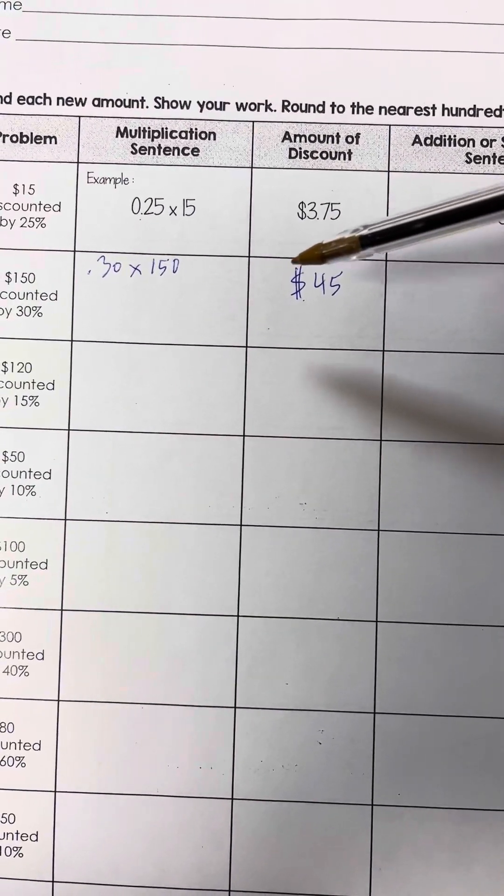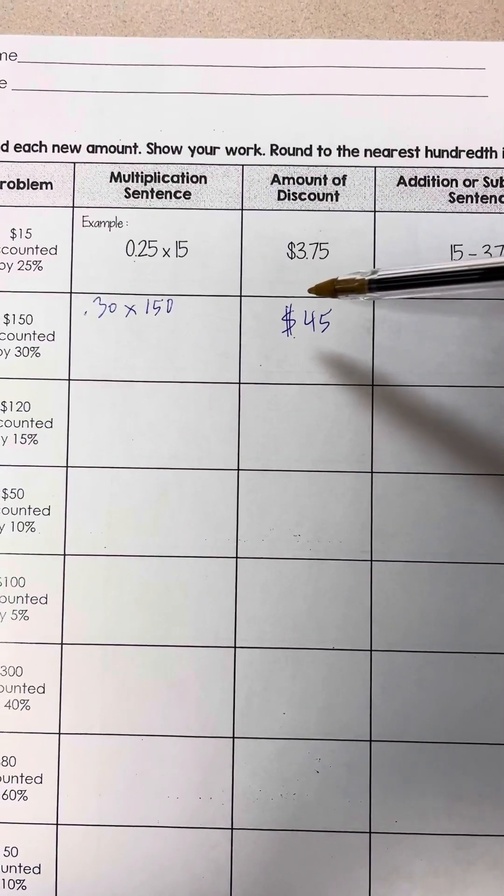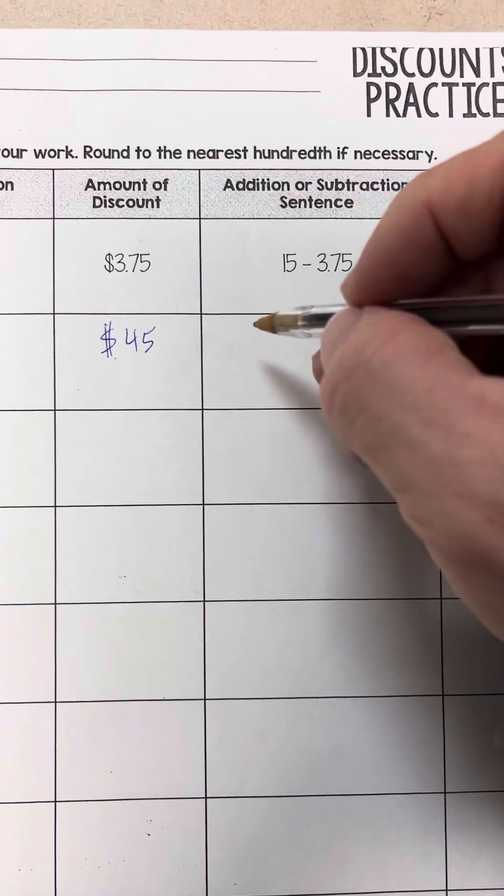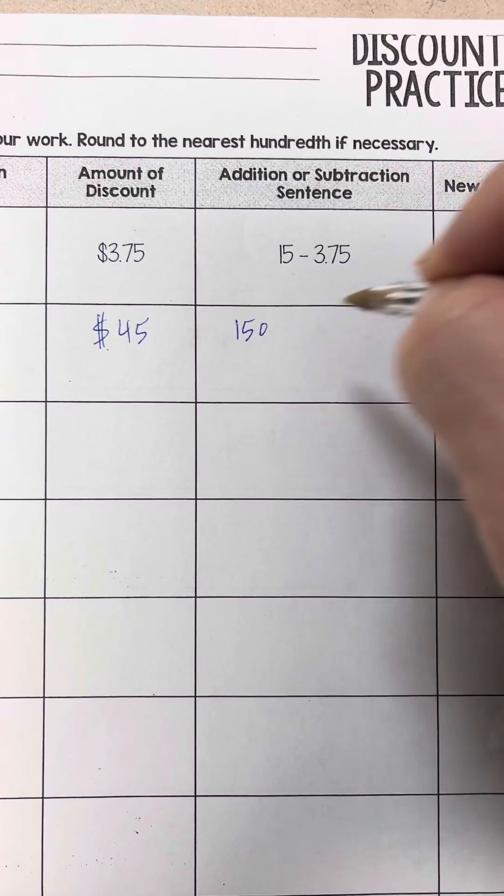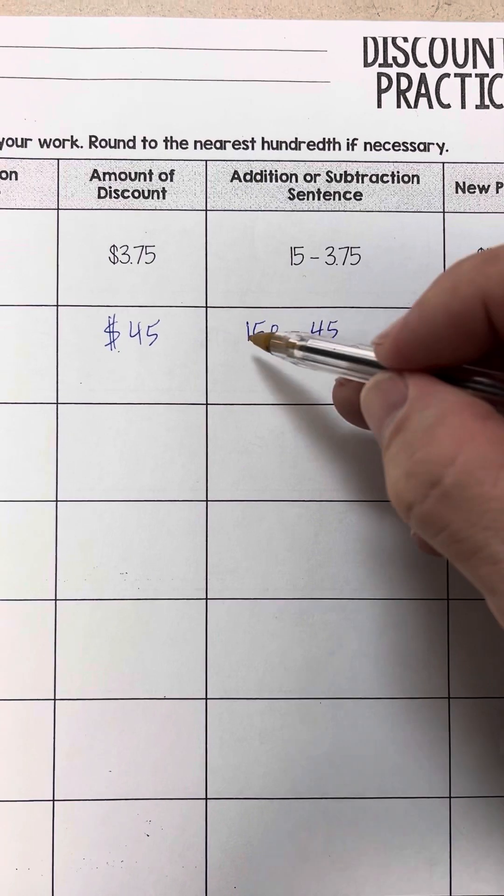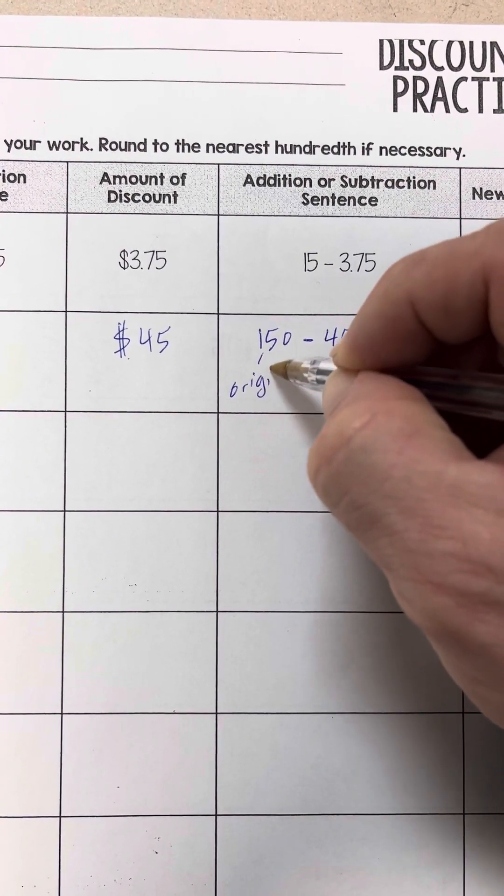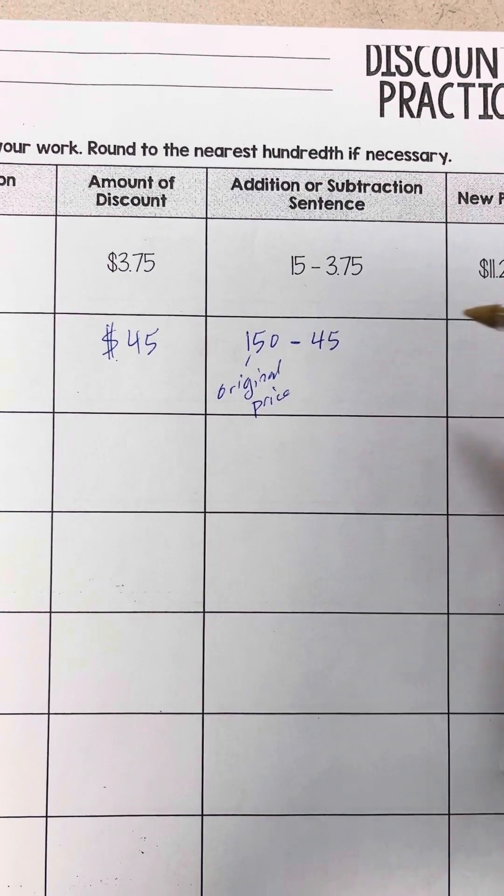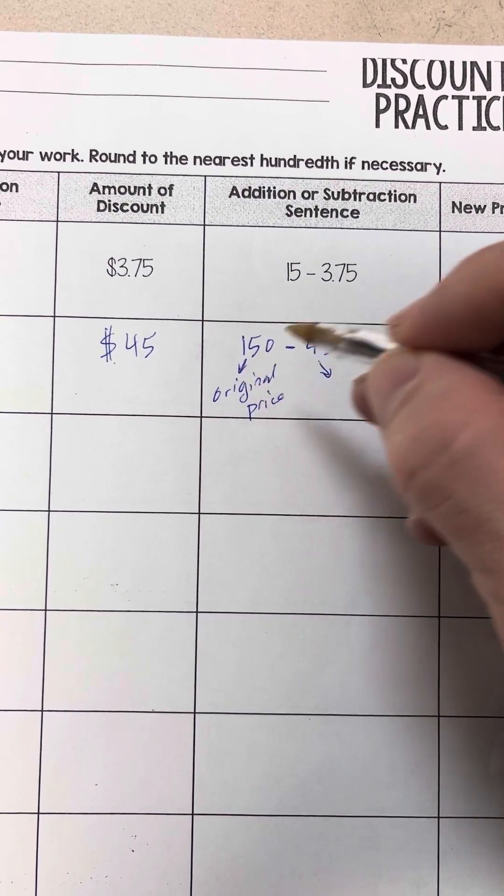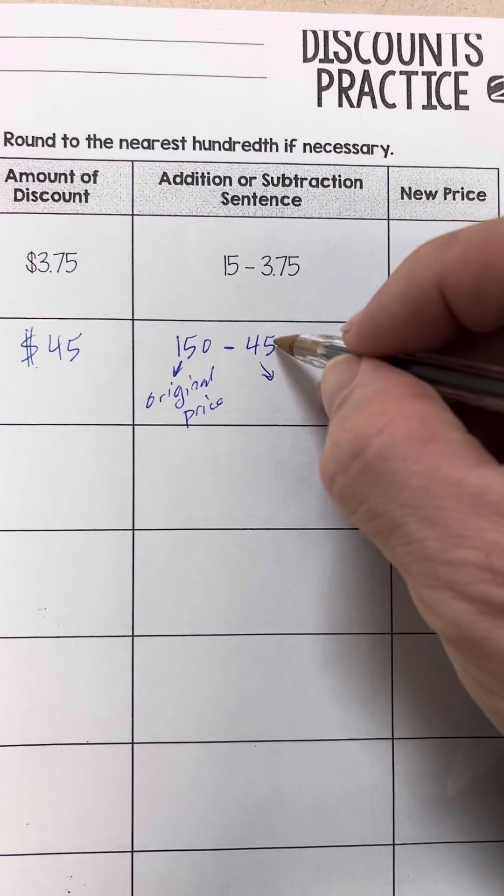So that's the dollar amount of our discount. Pretty good deal. Now, we're going to take the amount of our discount and subtract it from the original price. So the original price was $150, and we're going to subtract $45. So here's the original price, and then we figured out that the amount of that 30%, the 30% in dollars was $45.